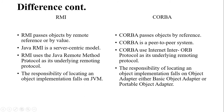RMI passes objects by remote reference or by value, while CORBA passes objects by value. RMI is a server-centric model, whereas CORBA is a peer-to-peer system. RMI uses the Java Remote Method Protocol as its underlying remoting protocol, while CORBA uses the ORB (Object Request Broker) protocol. The responsibility of locating an object implementation falls on the JVM in RMI, whereas in CORBA it falls on the Object Adapter — either Basic Object Adapter or Portable Object Adapter.